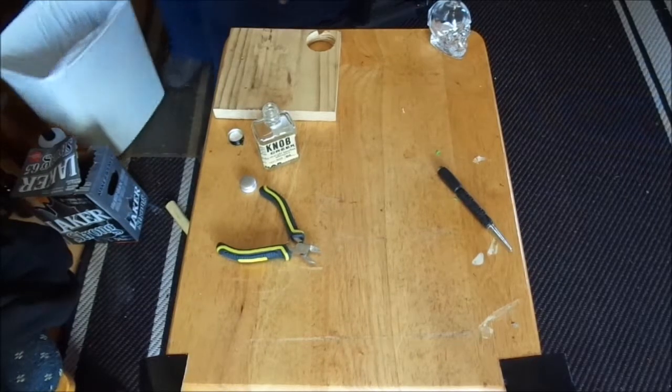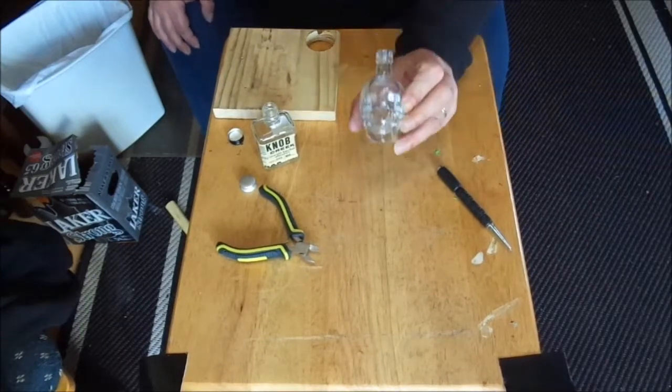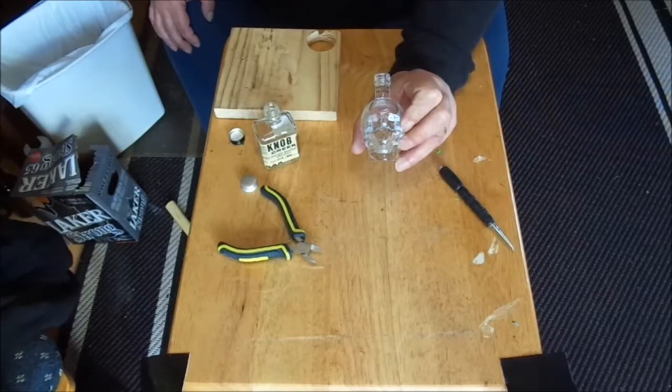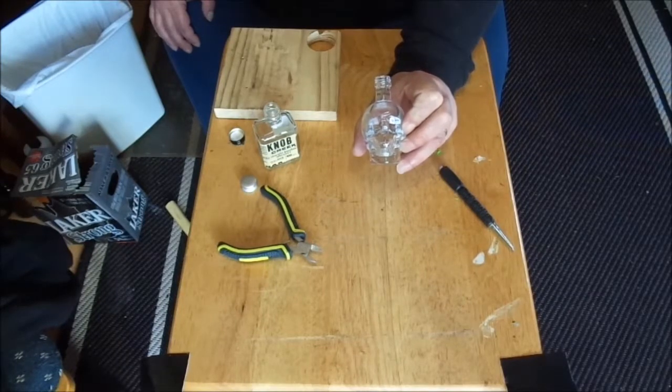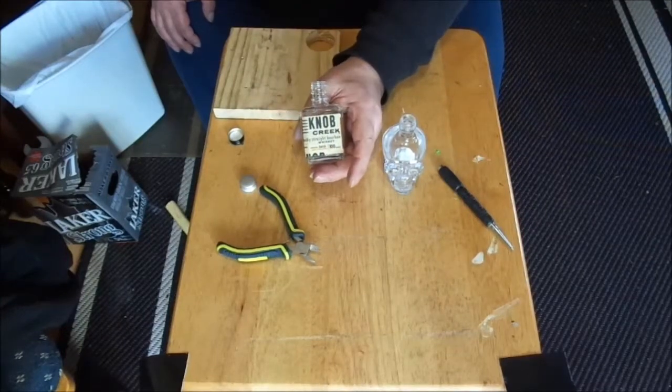Today I thought I'd make some little miniature tea lights using a Skull Vodka bottle, a little miniature, and a Knob Creek Kentucky Straight Bourbon.